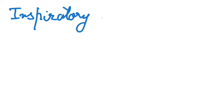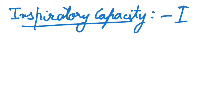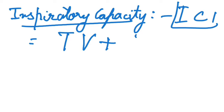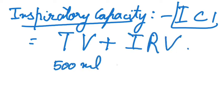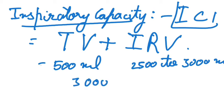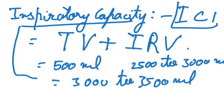Let's move to some more terms. Next we have inspiratory capacity, which is the total volume of air a person can inspire after a normal expiration. This includes tidal volume plus inspiratory reserve volume, giving around 3000 to 3500 ml on average.